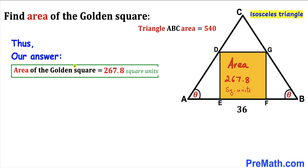The area of this golden square turns out to be 267.8 square units. Thanks for watching and please don't forget to subscribe to my channel for more exciting videos.